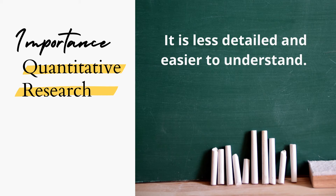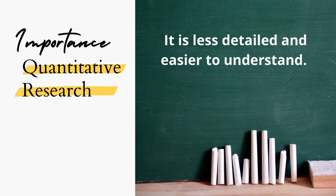The fifth reason why quantitative research is important is because it is less detailed and easier to understand. For ordinary people, it is easier to understand data and findings as it is. Whatever is written on the paper, on the graphs, on the tables, is as is. You don't need to have a different point of view or a different kind of interpretation when you look at the findings. This is because quantitative research presents data as it is — you don't have to interpret it further, because the data gathered and the information presented is already complete and very much objective.